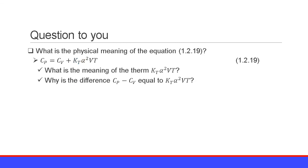Now I would like to ask you a question: I don't understand the physical meaning of equation 1.2.19, Cp = Cv + K_T · α² · V · T. What is the meaning of the term K_T · α² · V · T — that is, the difference between the isobaric and isochoric heat capacities? If you have any idea, please let me know.